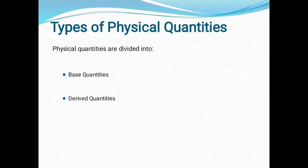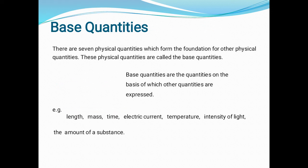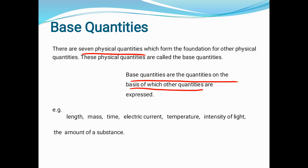Physical quantities are divided into base quantities and derived quantities. Let's first discuss base quantities. There are seven physical quantities which form the foundation for other physical quantities — these are called the base quantities. Base quantities are the quantities on the basis of which other quantities are expressed.